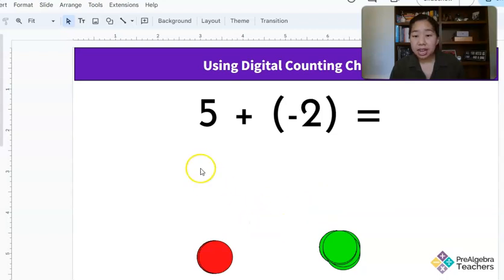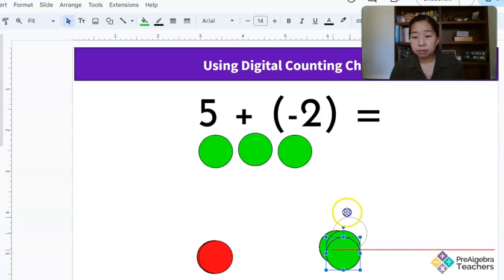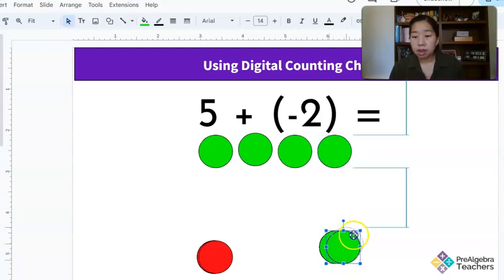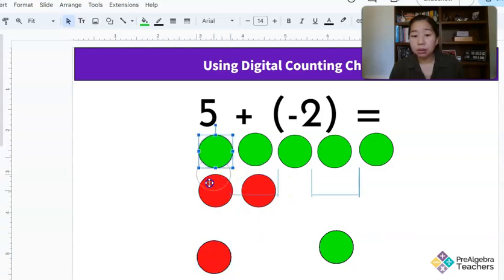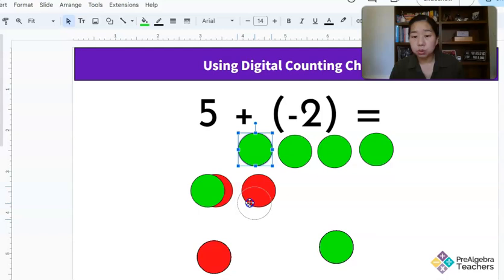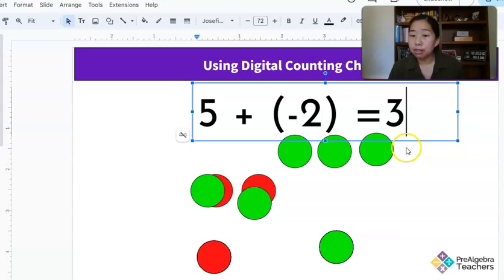Now in my next example, same thing. I have five plus negative two. So I have five positives. Here are my five positives. And then I have two negatives. So I'm going to take my two negatives here. How many of these zero out? Well, this one zeros out, this one zeros out. Three positives. So my answer is going to be positive three.